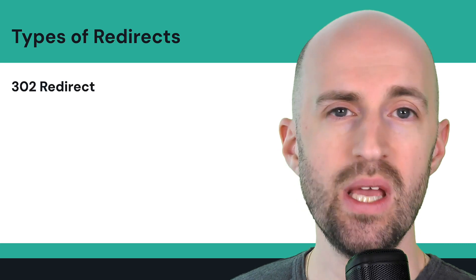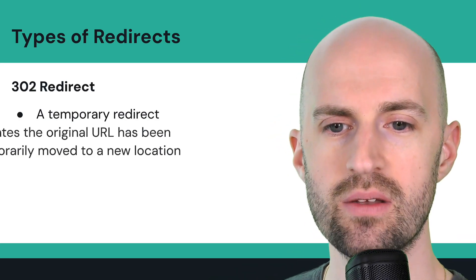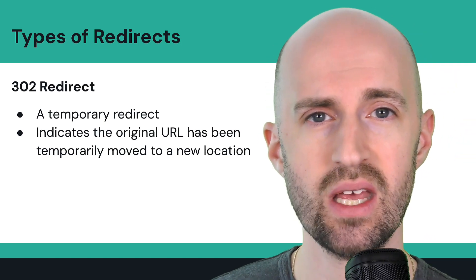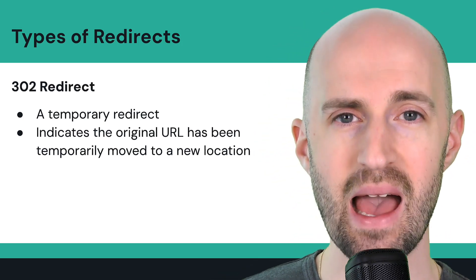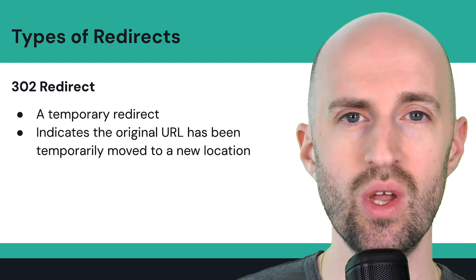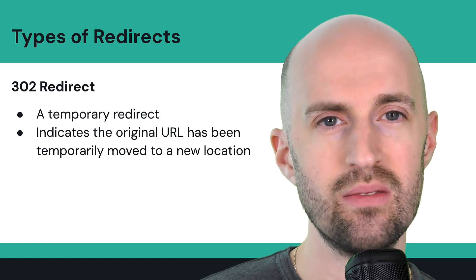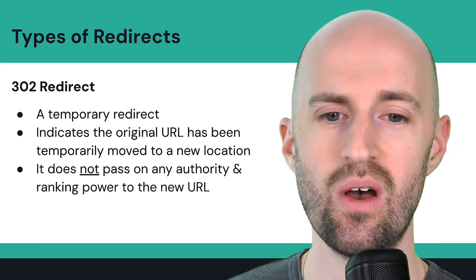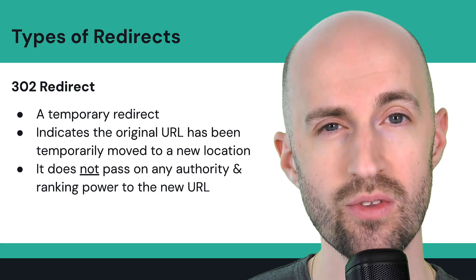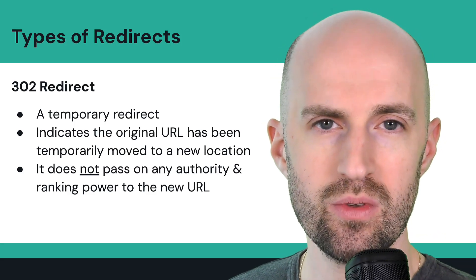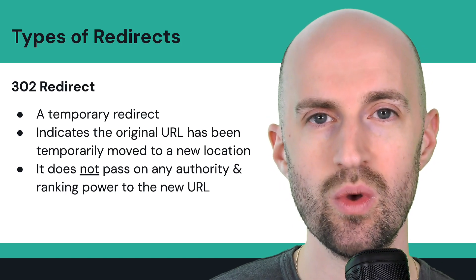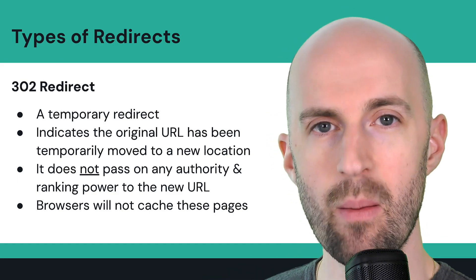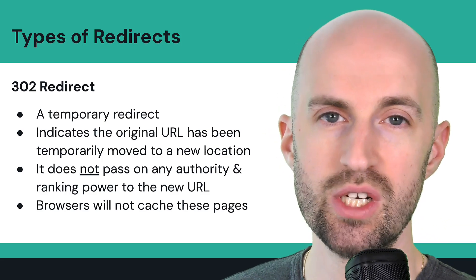We also have the 302 redirect, which is known as a temporary redirect. It indicates that the original URL has been temporarily moved to a new location. You might use this if you have a promotional page that's just temporarily active and you want to redirect it to a new promo — for example, redirecting to another promo a month later. It does not pass on any authority or ranking power to the new URL — that's the key thing to remember. Browsers will not cache these pages because they're not permanent, and you might have to revert to the original URL eventually.